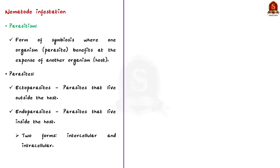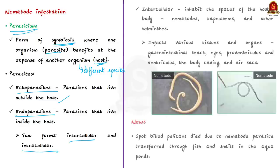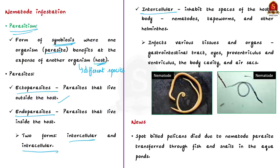To understand nematode infestation, we first need to understand parasitism. Parasitism is a form of symbiosis where one organism benefits at the expense of another organism of a different species. The one getting the benefit is called the parasite and the other is the host. Parasites may be grouped into ectoparasites, which live outside the host, and endoparasites, which live inside the host. Endoparasites are further divided into intercellular parasites and intracellular parasites.